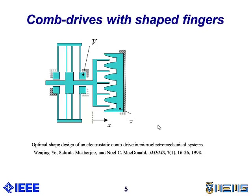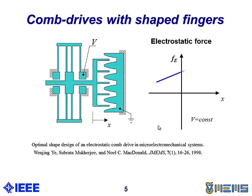The idea of using shaped fingers dates back to the PhD of Wenjing Ye in Cornell in 1998. What she showed is that we can compute a specific geometry for a finger such that for a fixed voltage the electrostatic force is a linear function of motion. So again, this is for a fixed voltage and therefore we get a constant stiffness but here we also get a bias force.